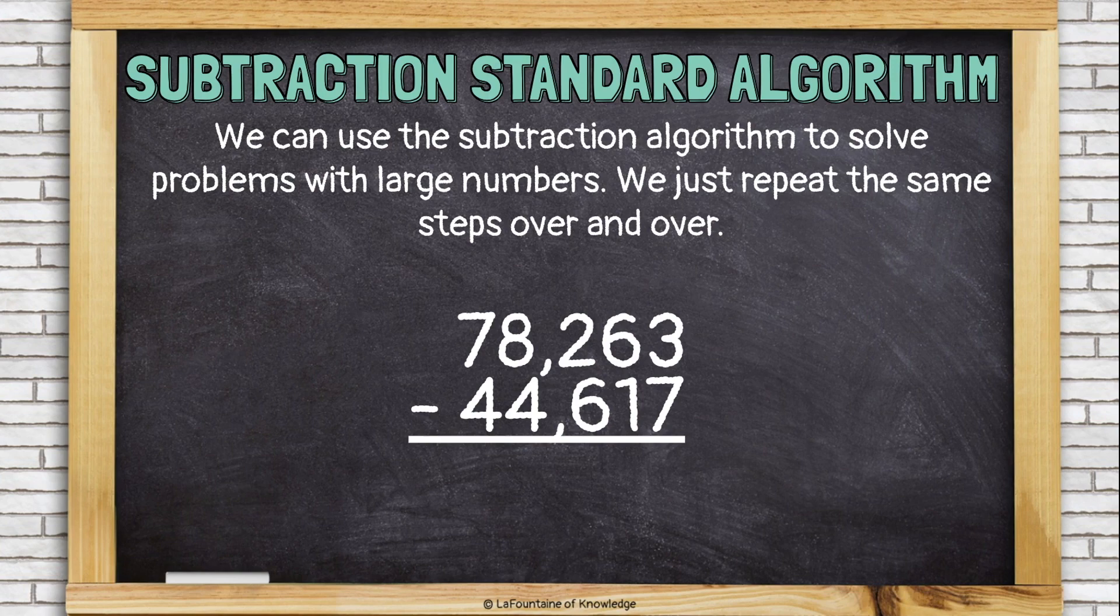Let's take a look at 78,263 minus 44,617. Starting in the ones place, three minus seven. Well, we already have a problem because we can't take seven away from three.